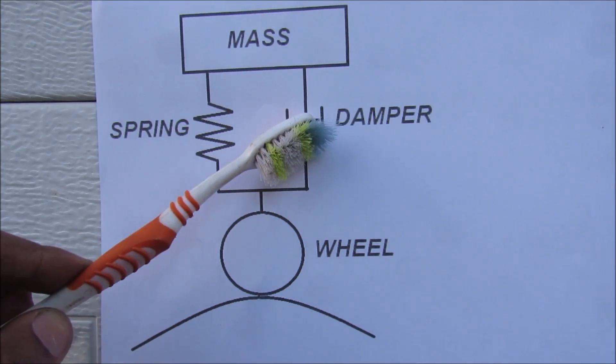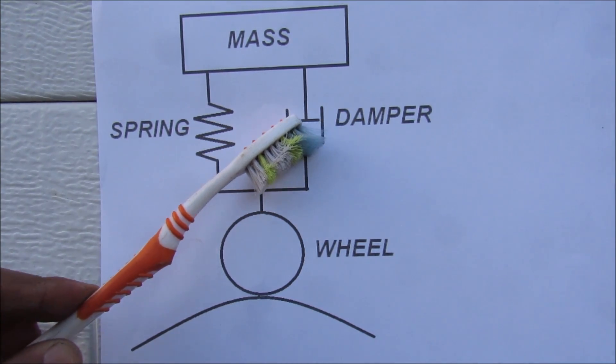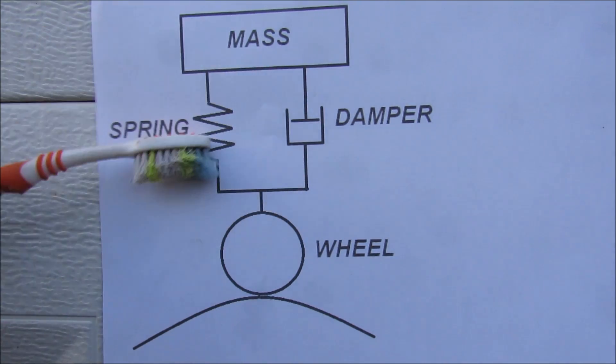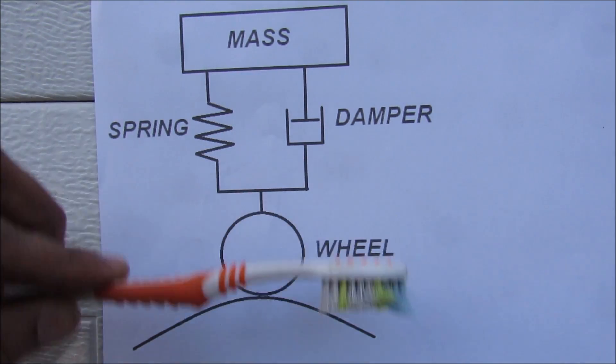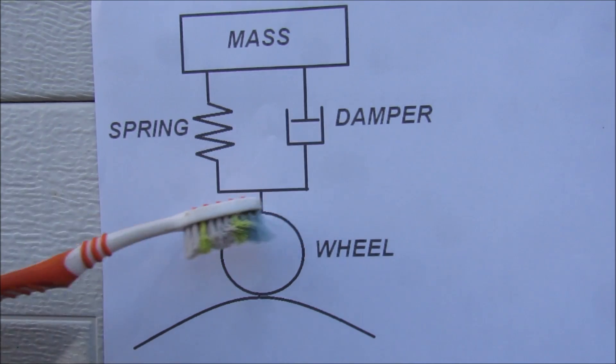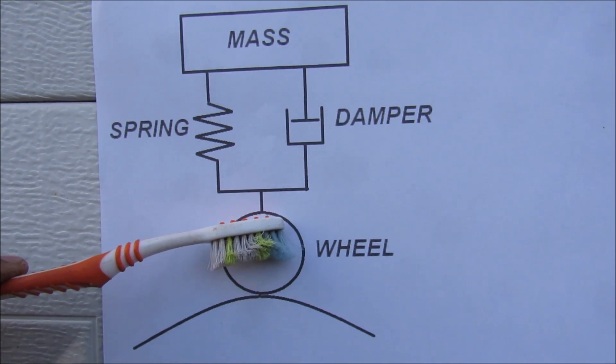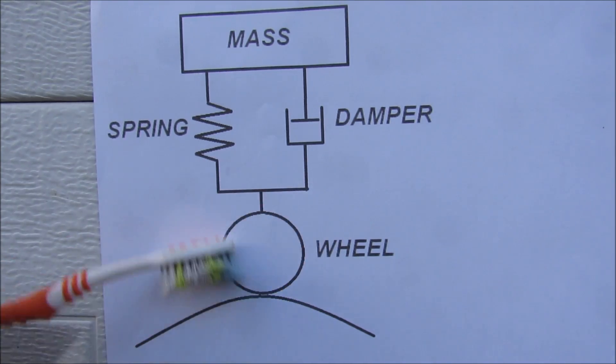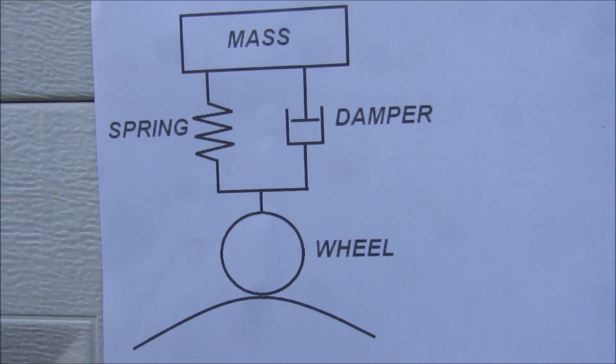When your shocks and struts are worn out, your damping effect is no longer part of the equation and the system becomes a mass-spring system where your wheel is just bouncing along the road. Since you have no more damper to absorb that impact, your tire itself is going to start absorbing that impact and you're going to notice flat spots from that bouncing along the circumference of your tire.